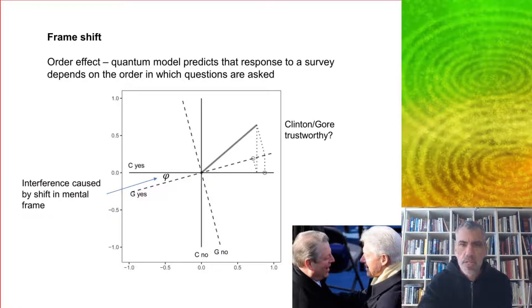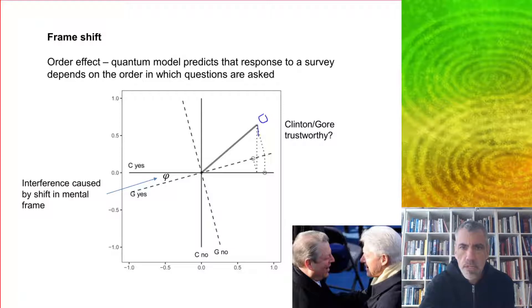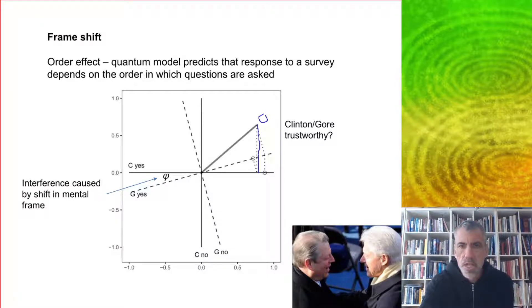What you see is that our state here is about 40 degrees, so it's roughly equally balanced in the Clinton axis for saying yes or no. Let's say that the response to the question is yes, Clinton is trustworthy. That is then used as the starting point for the next question about Gore, and then we get one end point here.